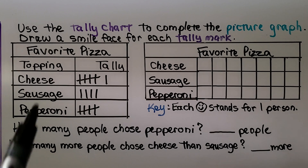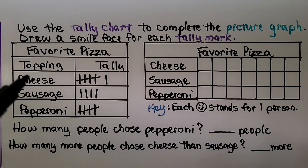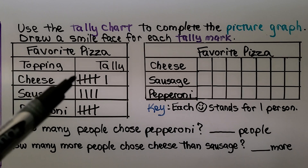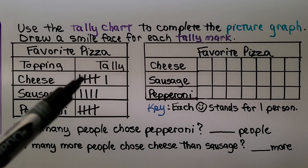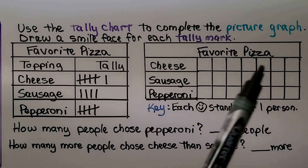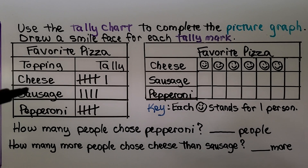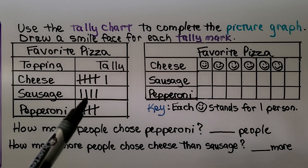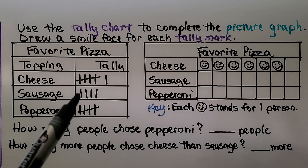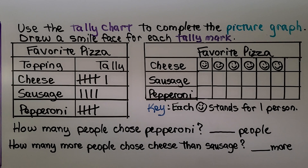For each tally mark, we need to draw a smile face. For cheese, I see five and one more — that's six. We need to put six smile faces for cheese. For sausage, I see four tally marks, so we put four smile faces for sausage in the picture graph.